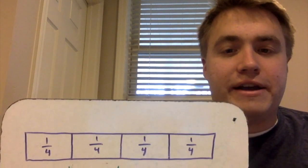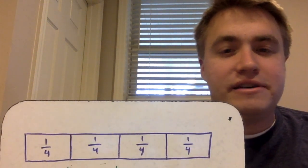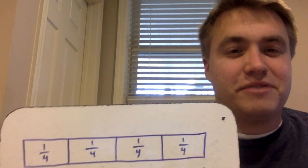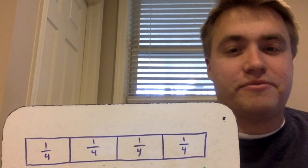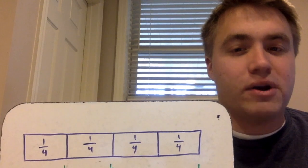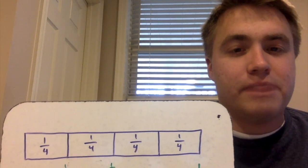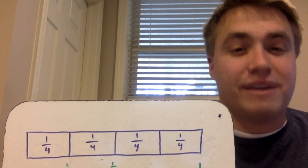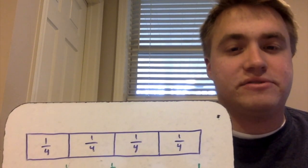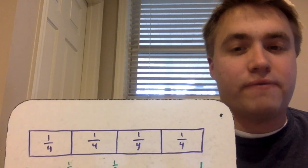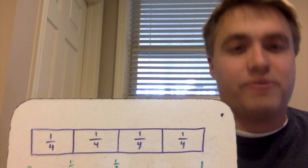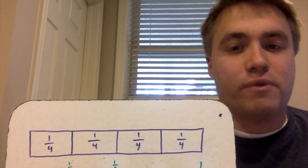If I show this top part right here for a second — yesterday, this should be something that you recognize, where I have a rectangle that represents one whole, and I broke my rectangle up into four equal parts, and I represented that as one-fourth, one-fourth, one-fourth, and one-fourth.